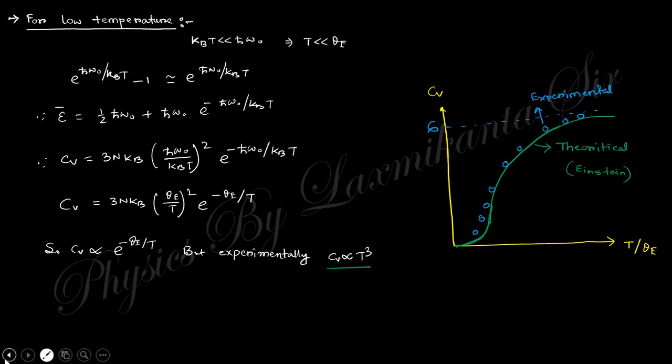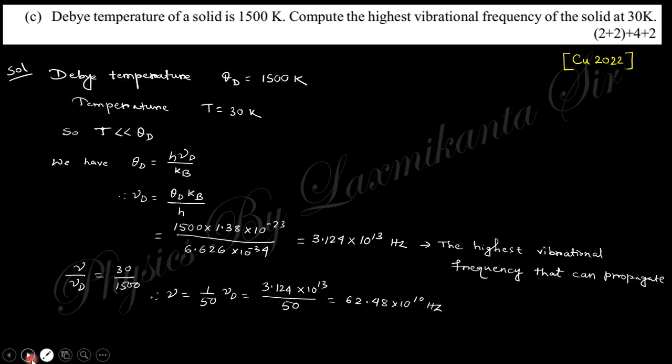Next question: Debye temperature of a solid is 1500 K. Compute the highest vibrational frequency of the solid at 30 K. For Debye temperature, you obtain Debye frequency, and these frequencies are linearly proportional to temperature. You obtain the calculation showing the highest vibrational frequency.